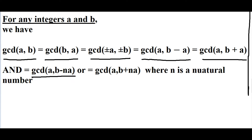Further: gcd(a, b − n·a) = gcd(a, b + n·a) = gcd(a, b), where n is any integer. I have written both plus and minus since n is defined as a natural number here. Just don't put n = 0, otherwise it's just gcd(a, b).